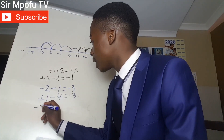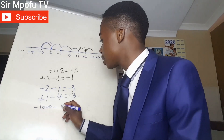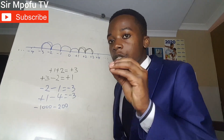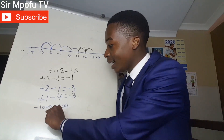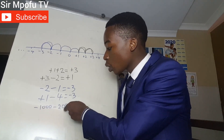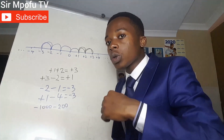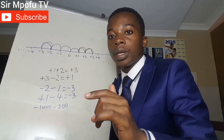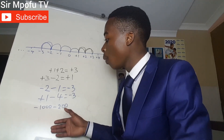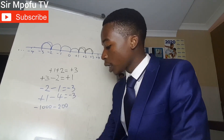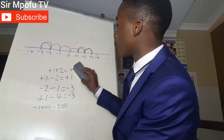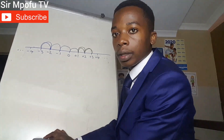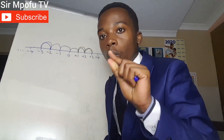What if you have positive one minus four? You're at positive one and you move four times going back — one, two, three, four — your answer is minus three. But what if you have minus one thousand minus two hundred? It's impossible to draw a number line starting at minus one thousand and moving two hundred times back. That's why I'm going to give you rules so you know how to solve this easily.